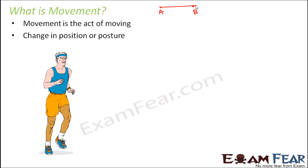Movement is a change in position or posture. When we say position, an object moves from one place to another — that object not necessarily has to be you as an organism; it could be your finger moving. Or it could be a change in posture. For example, you are standing at the same position but moving your neck from one side to another. Your posture is changing every time your neck moves, so that is also an example of movement.